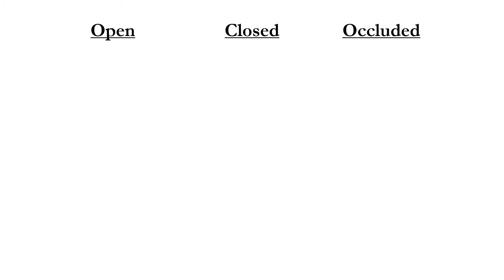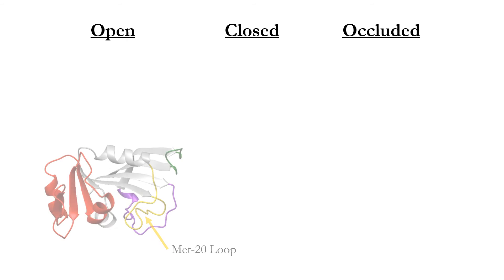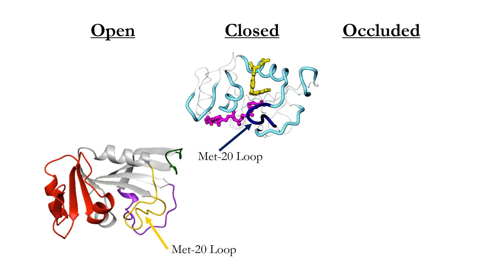The MET20 loop is very flexible and can take on three conformations called open, closed, and occluded. In its open conformation, the MET20 loop faces away from DHFR's active site, allowing NADPH and dihydrofolate to bind there. Once the two substrates bind, the MET20 loop changes to its closed conformation. This allows the residues in the loop to form favorable interactions with NADPH's nicotinamide ring, catalyzing the transfer of a proton from NADPH to dihydrofolate.